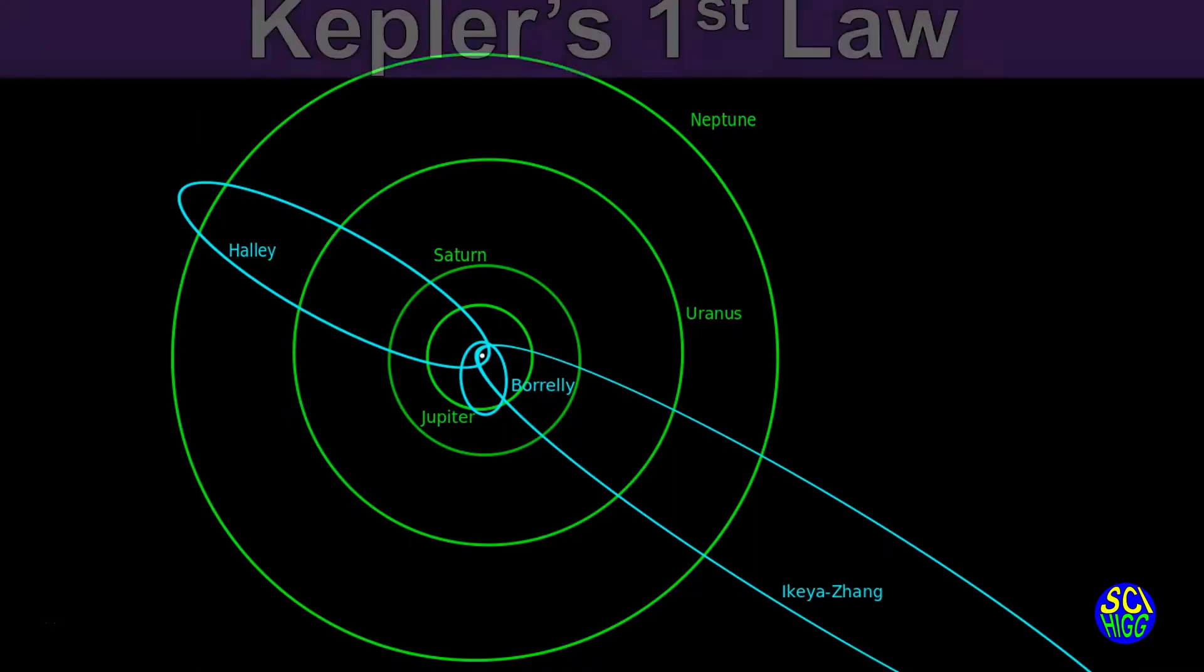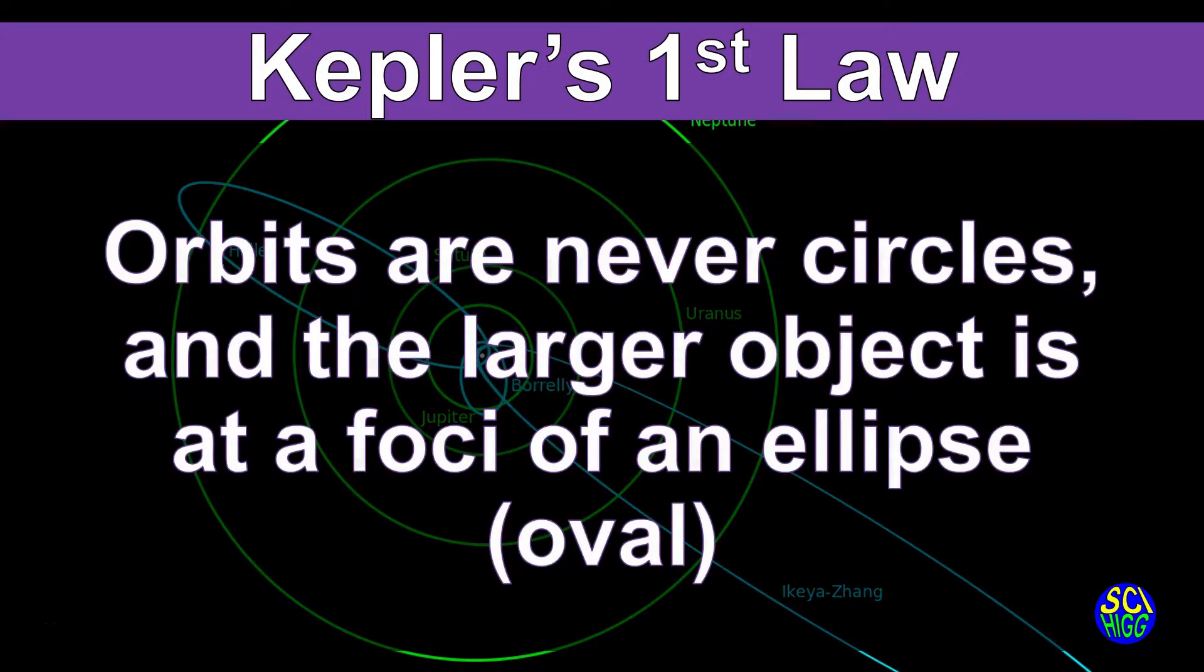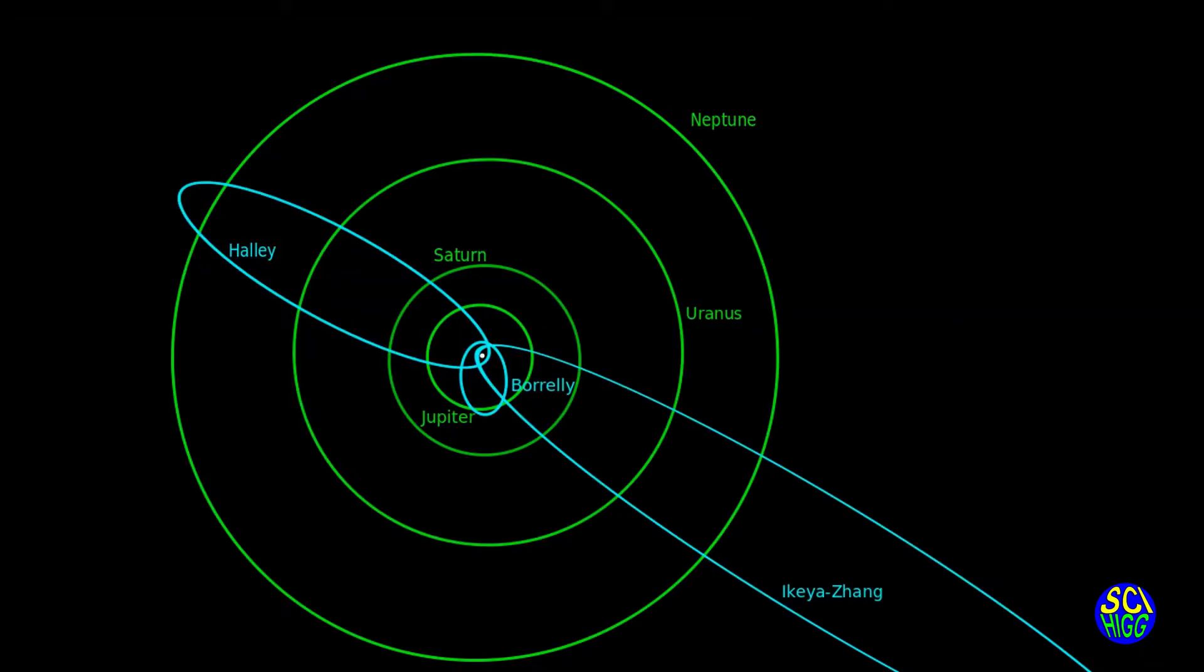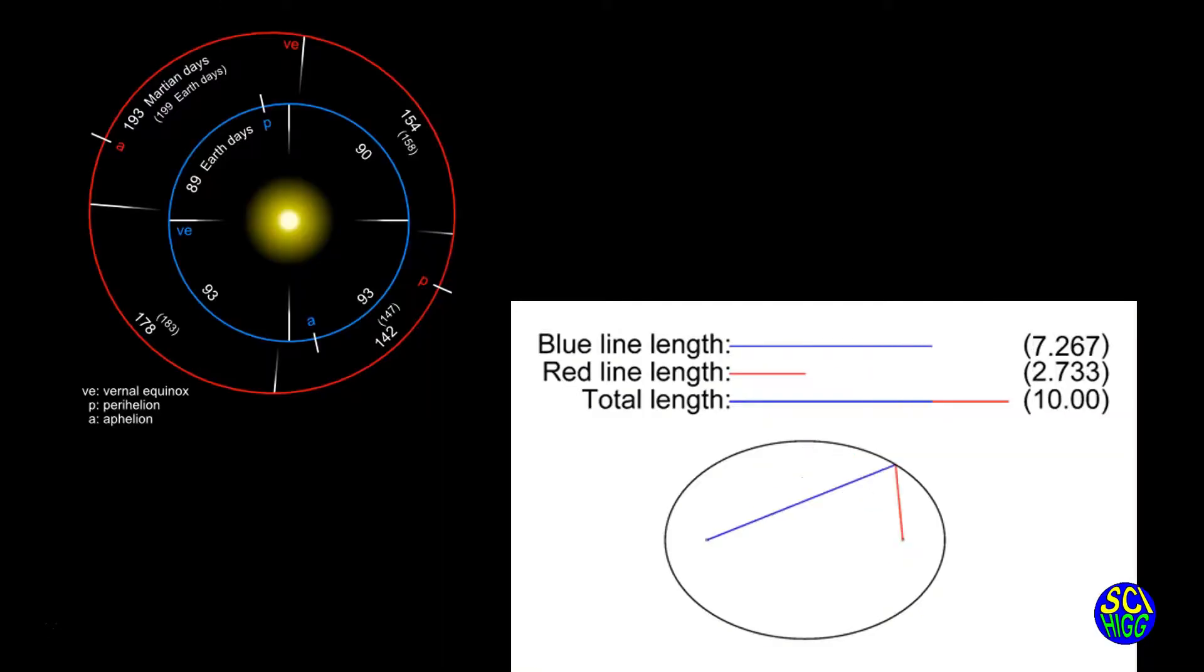Johannes Kepler was the first astronomer we credit with giving us the laws of the motions of the planets. Kepler's first law describes motion in that the orbits, they're never circles, and the larger object is at the foci of an elliptical or oval orbit. The observation that led to our understanding that orbits cannot be perfect circles originates in the orbits of Mars. Measurements of Mars' orbit didn't quite match observation, unless Mars' orbit is slightly elliptical as it goes around the Sun.